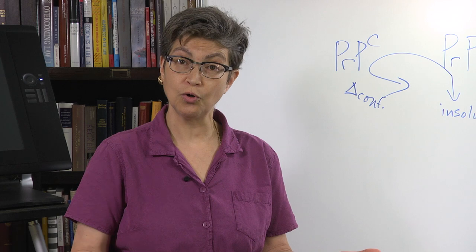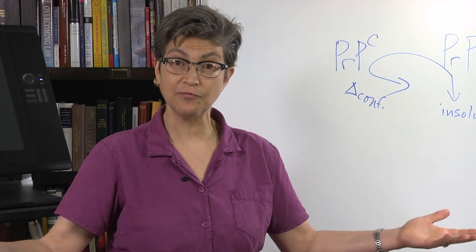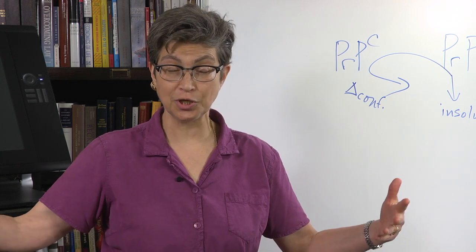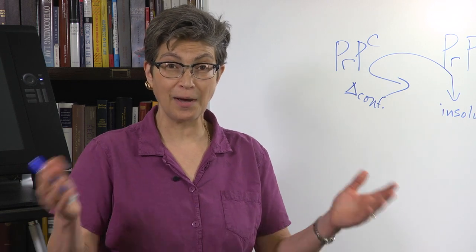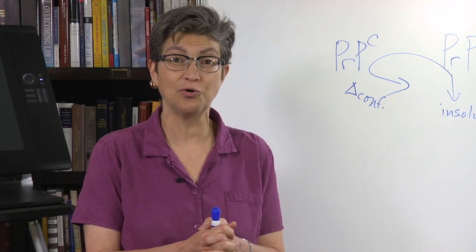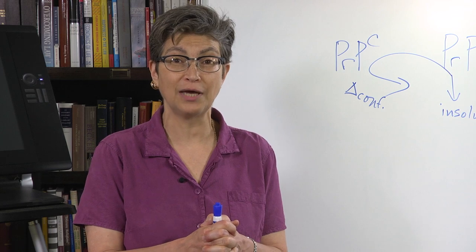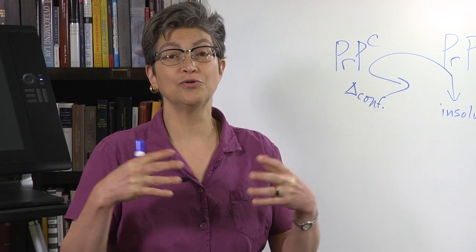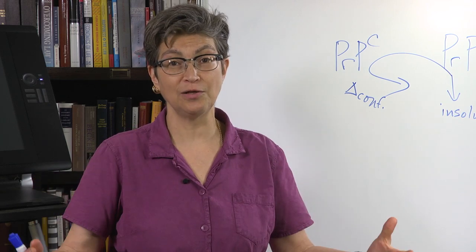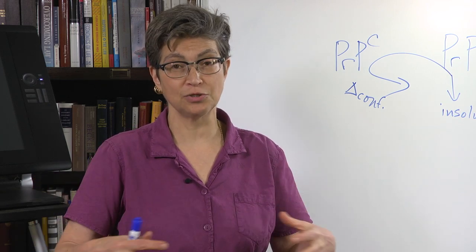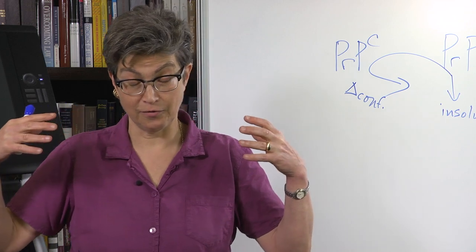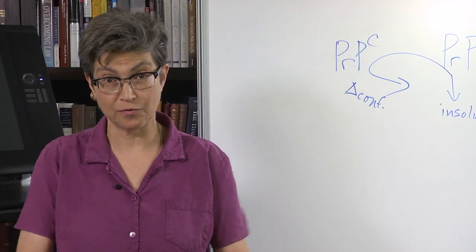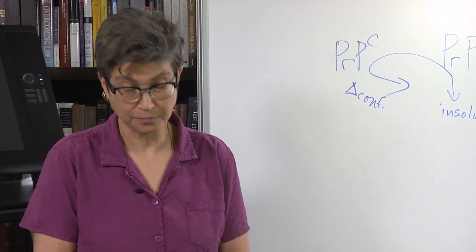Now we're going to leave neurons and glia and progenitor cells behind, and go look at how the nervous system develops in the interest of understanding the anatomy of the nervous system.